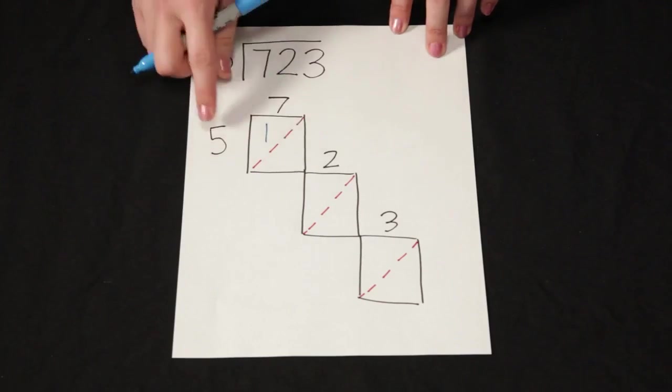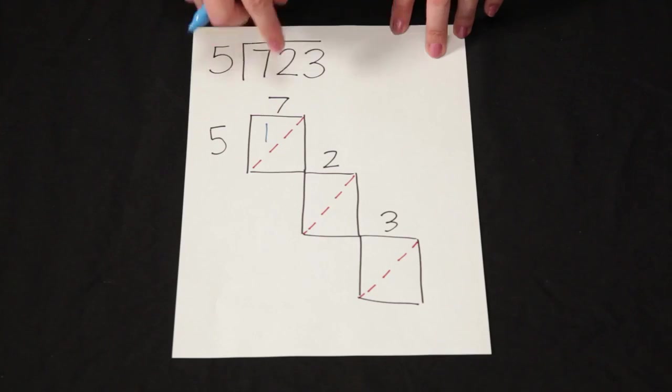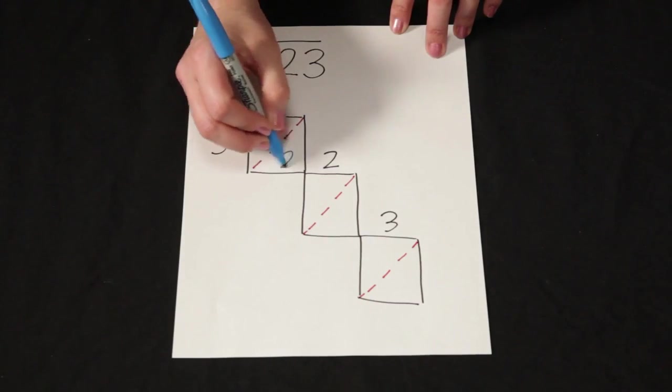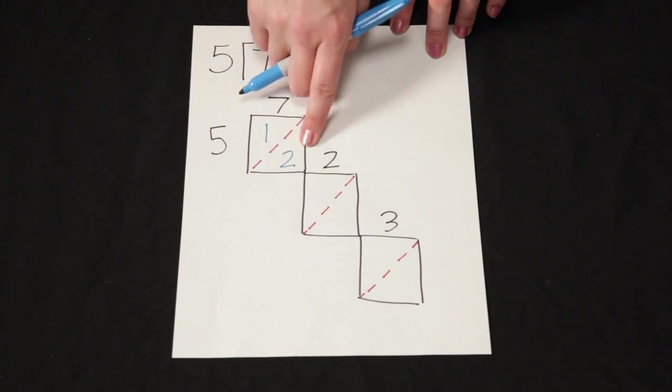1 times 5 is 5. And then if I subtract that, 7 minus 5 is 2. So I made one group of 5 with 2 remaining.